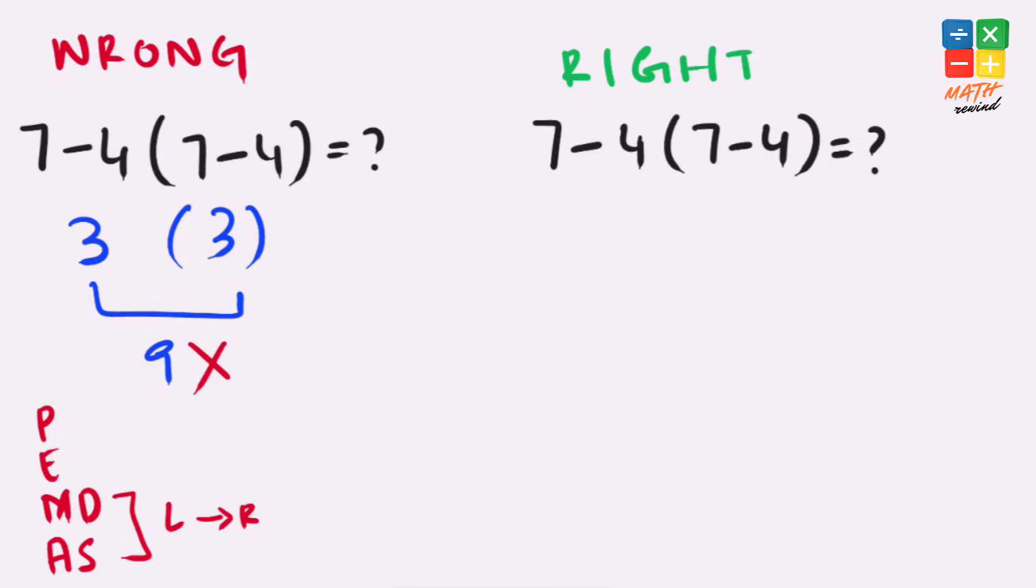Now let's rewind and solve it the right way. So according to the rules, parenthesis has the top priority, so we must solve this first. So 7 minus 4 gives us 3. So our equation now simplifies to 7 minus 4 times 3.